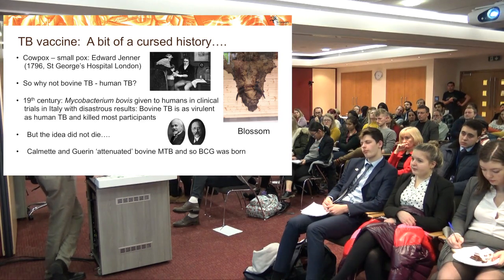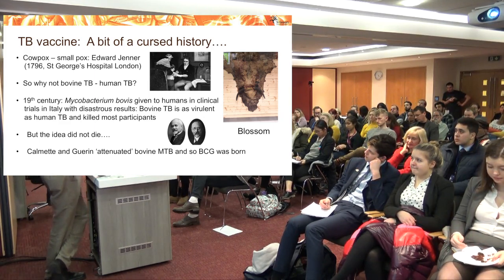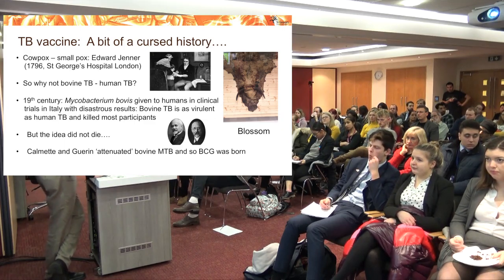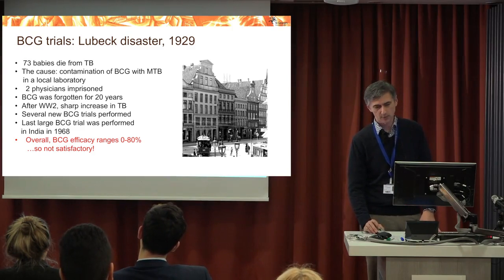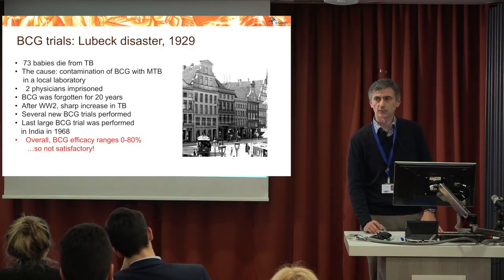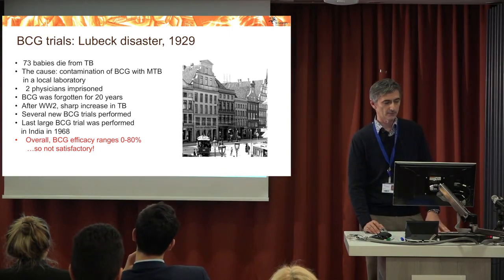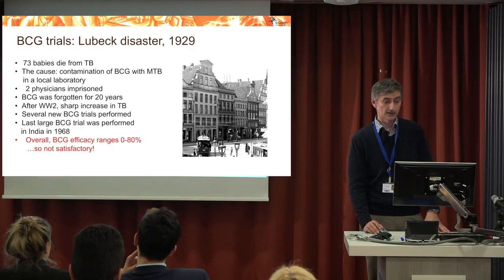Two French physicians, Calmette and Guérin, took the idea further and attenuated — made less virulent — the bovine tuberculosis strain, so it could be given to humans without causing disease. The first clinical trial with the newly generated BCG (Bacillus Calmette-Guérin) vaccine was conducted in Lübeck, Germany. About 250 babies were given the vaccine, but about a third contracted TB and died. It was found that the BCG vaccine had been contaminated with the TB strain due to a mix-up in the local laboratory. Physicians were imprisoned, and BCG was almost forgotten for 20 years.